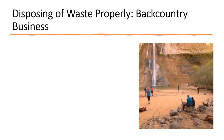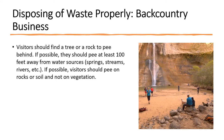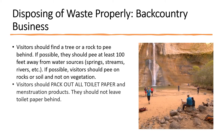Visitors can dispose of waste properly by following these easy steps when they need to pee: find a tree or a rock to pee behind, and if possible, pee at least 100 feet away from water sources like springs, streams, and rivers. If possible, visitors should pee on rocks or soil and not on vegetation, as animals will sometimes strip plants that have urine on them to access the salts left behind. Visitors should pack out all toilet paper and menstruation products — toilet paper takes a long time to degrade in this arid environment and will often blow away in the wind, becoming litter on trails. One tactic is to pack out used toilet paper and other products using a Ziploc bag and dispose of it in a garbage can when one is available.